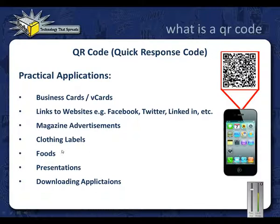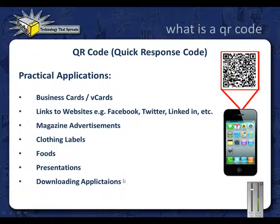Foods — a lot of people want to know where their food is made or grown and what's in it, so a QR code can link to that information. Presentations — you scan it and it goes to a webinar or a video on the product. But for the sake of this demonstration, the focus is really downloading an application — telling the phone to go to a website so somebody can download an app. And it's really simple.